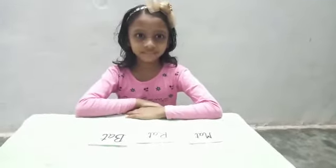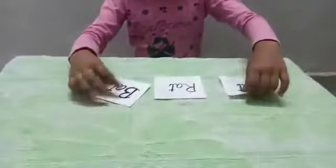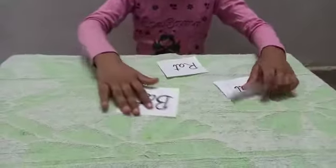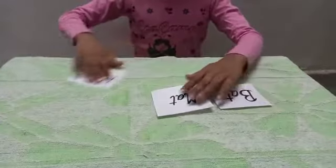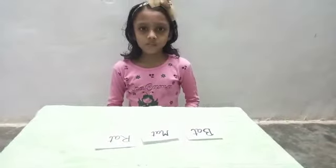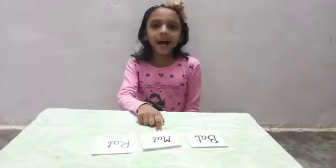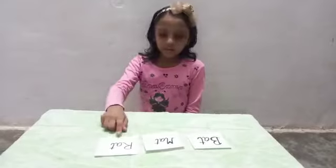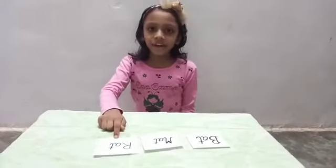Now arrange these words in dictionary order. Okay. Batman will come first, Matt will come next, then last, Red will come.